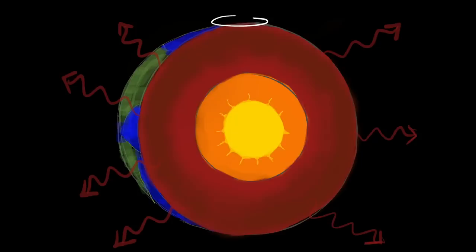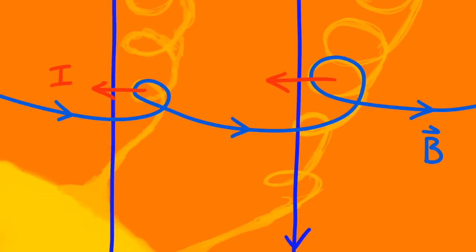Now, add to this the fact that the Earth is rotating. The rotation causes those convection currents to spiral around an axis roughly parallel with the Earth's axis of rotation. These spiraling turbulent flows of liquid metal can trap magnetic field lines. And as they move and stretch the field, they create electric currents that produce more magnetic fields.